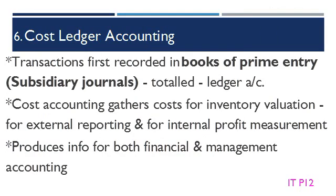Transactions are first recorded in books of prime entry, also called subsidiary journals. They are then totaled and the totals posted to the ledger accounts. Cost accounting gathers costs for inventory valuation, so that it can meet the requirements for external reporting and also for internal profit measurement. It produces information for both financial and management accounting.